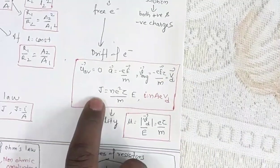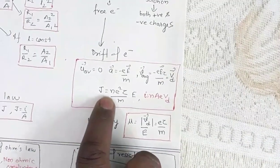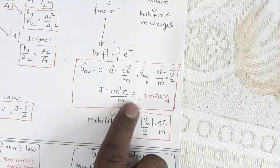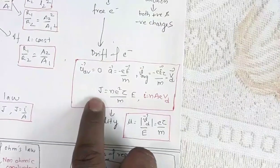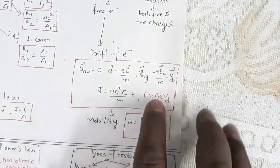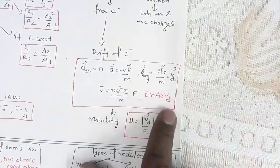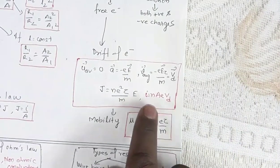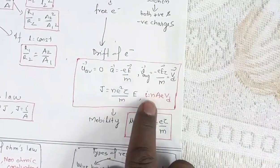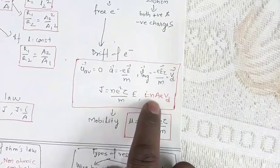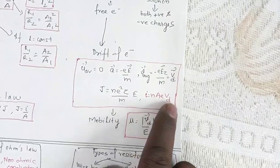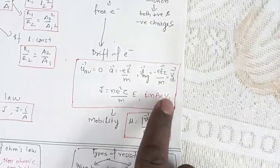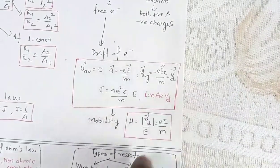The expression for current density is j = ne²τE/m. J is the current density, that is current per unit area. The relation between current and drift velocity is very important and often asked: I = nAeV_d, where n is number density, A is area of cross-section, e is the charge of an electron, and V_d is drift velocity.